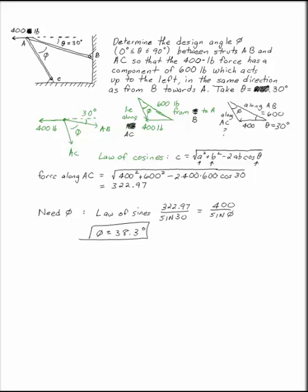That's the third force. So you'll have 600 pounds along AB, you'll have 322.97 pounds along AC, and these two will add up to be the 400 pound load that is applied.